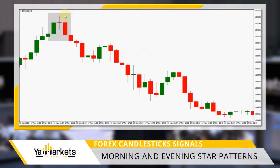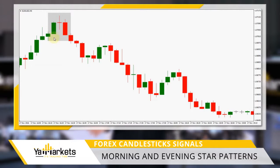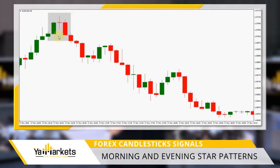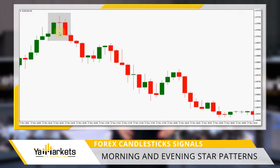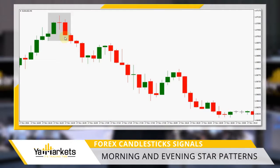On the other side of the trend, we can find the opposite signal known as the evening star. The first candlestick in the signal is a long bullish candle, the second candle is small and represents indecision, and the third is a long bearish candle that closes lower than the first candle's midpoint.